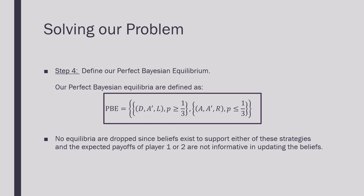We now define our perfect Bayesian equilibrium. The first equilibrium is where player one is playing D, player two is playing A prime, and player three is playing L, supported by the belief where P is greater than or equal to one-third. The second perfect Bayesian equilibrium is where player one is playing A, player two is playing A prime, and player three is playing R, supported by the belief of P being less than or equal to one-third. Interestingly, no equilibria are dropped since beliefs exist to support either strategy, and the expected payoff of player one or player two is not informative for updating these beliefs — so we've generated no refinement in this context.